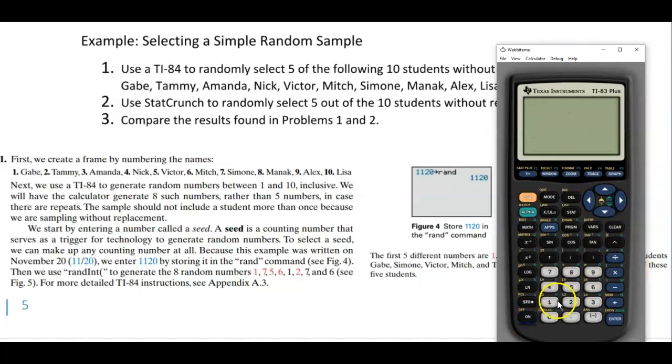So we're going to put in the number 1120, select the store button, and then we're going to go to math and then scroll to PRB for probability and select the number one by hitting enter. And so now we have this in our screen and then select enter. So therefore now it's being stored.